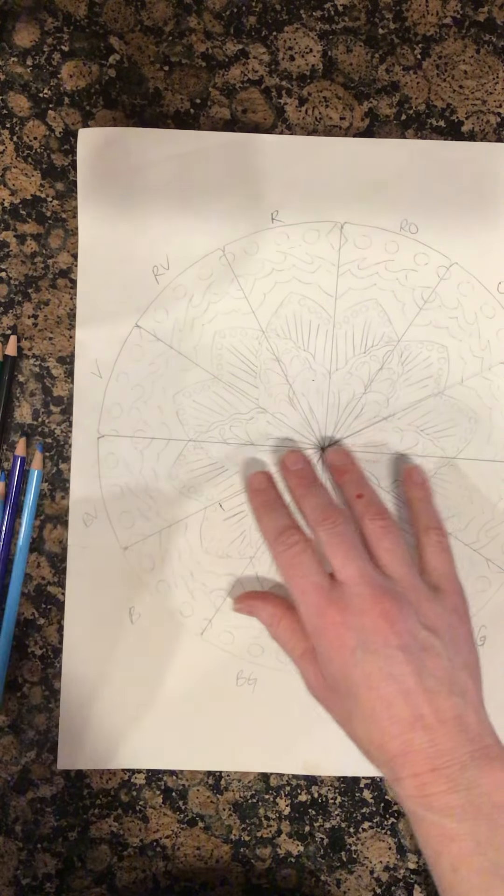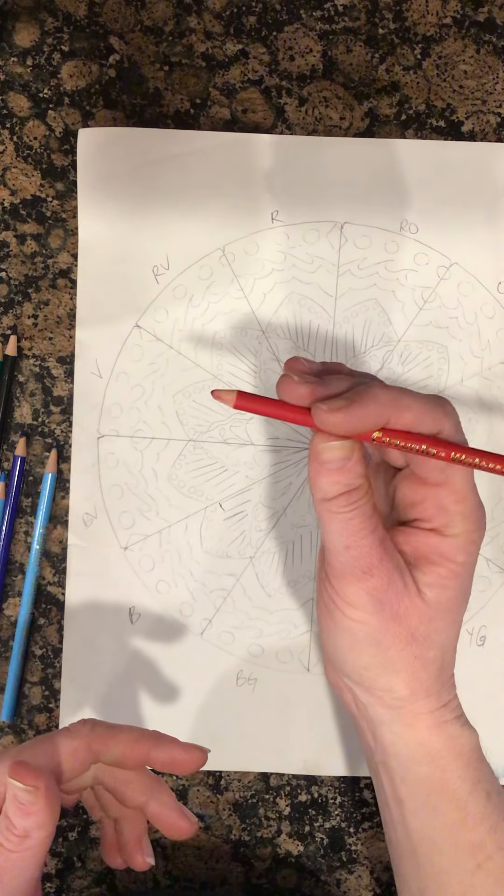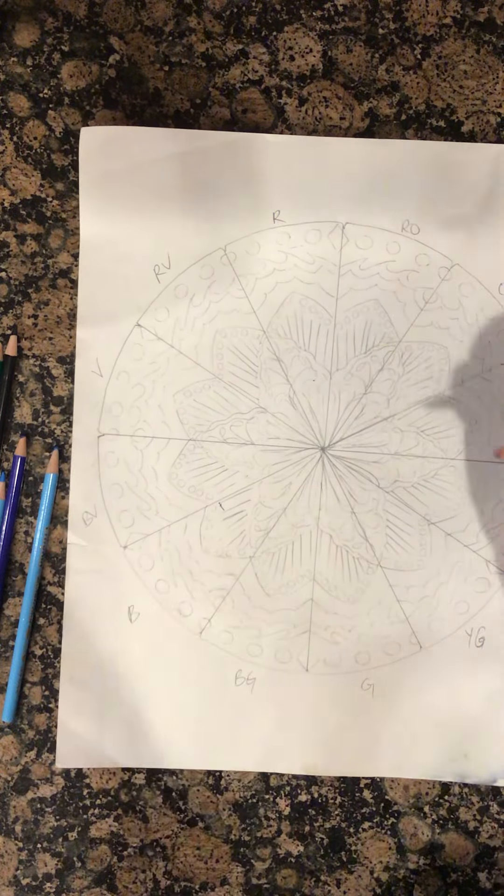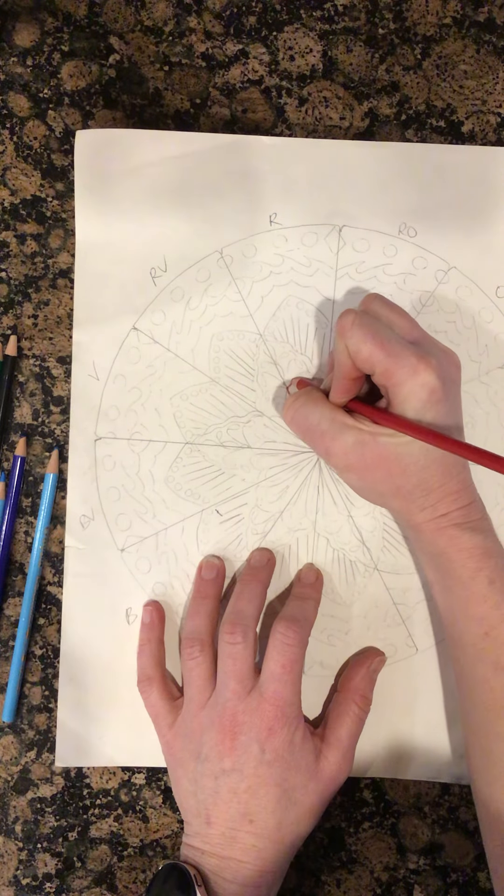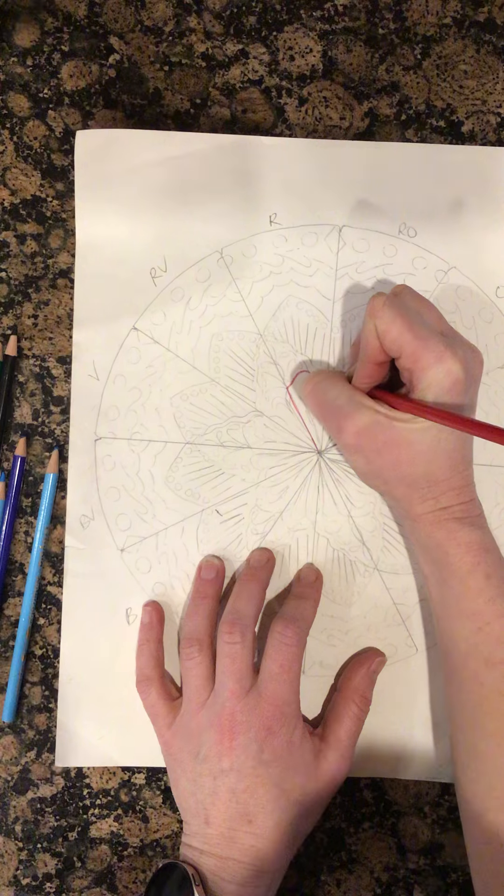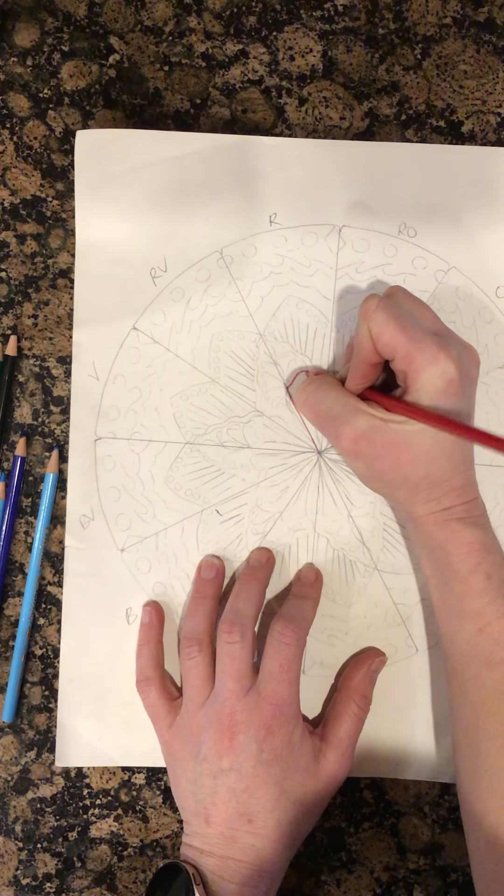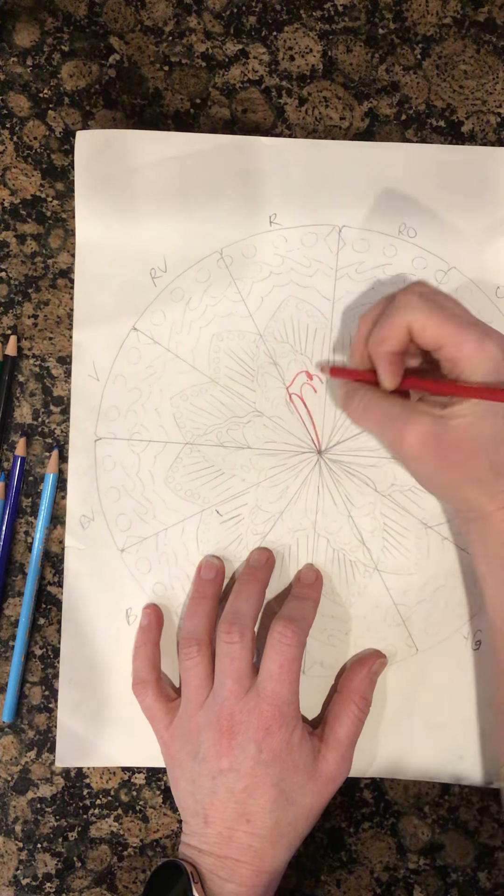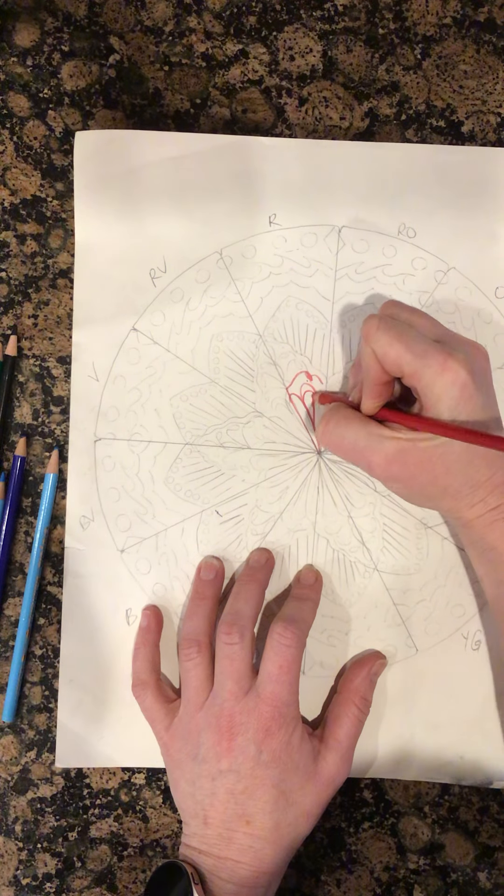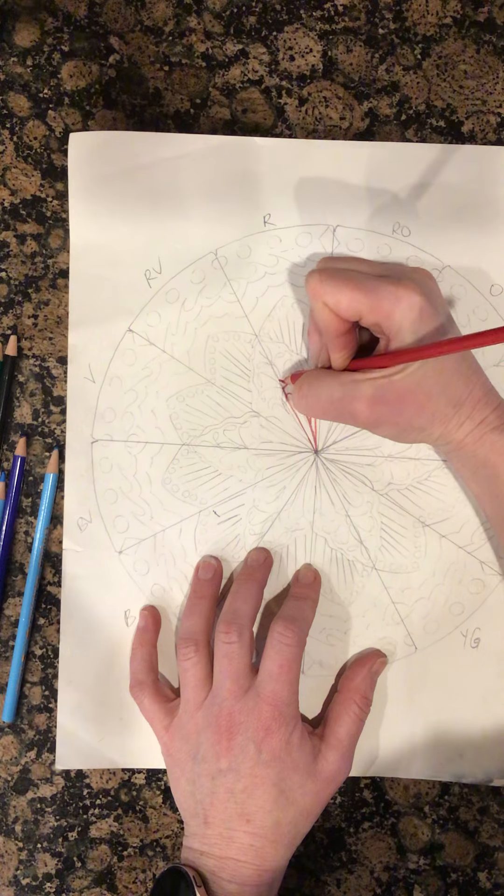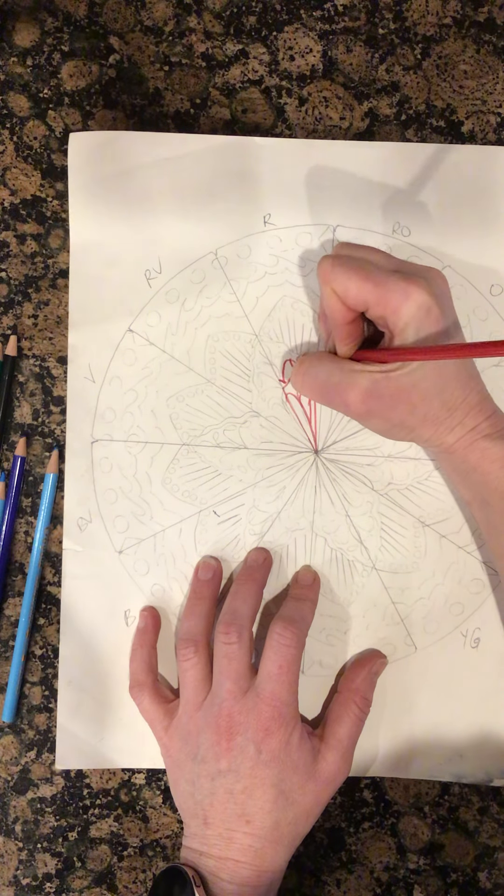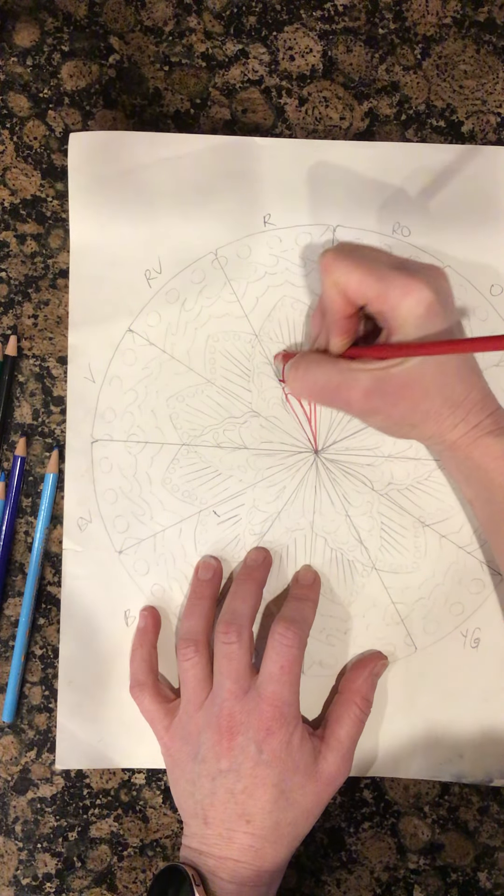I'm going to pick a primary color red. Here we go red. And then what I'm going to do is I'm going to outline just like a color pencil, just in my wedge, and then I'm going to outline what I want to do.